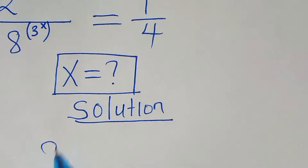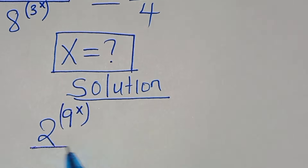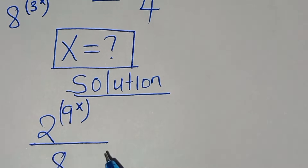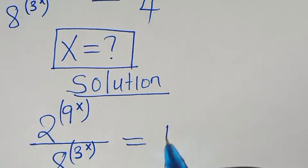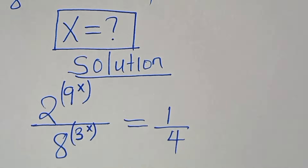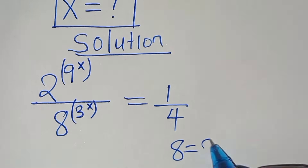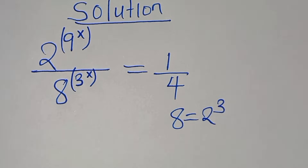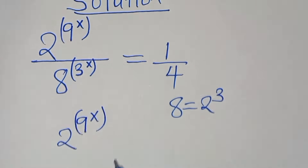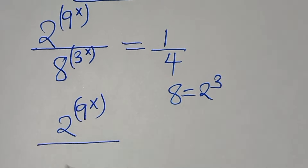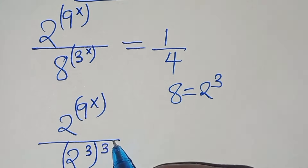We have 2 to the power of 9 raised to the power of x, divided by 8 raised to the power of 3 raised to the power of x, equal to 1 over 4. We can express 8 as 2 to the power of 3, so now we have 2 to the power of 9 raised to the power of x, divided by 2 to the power of 3 raised to the power of x.